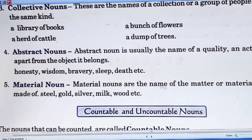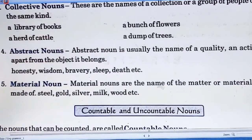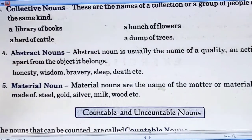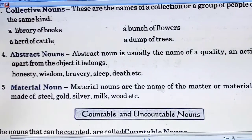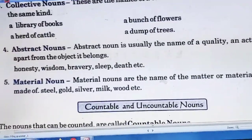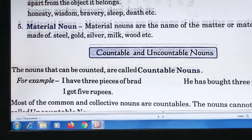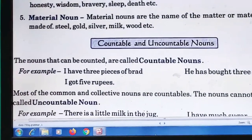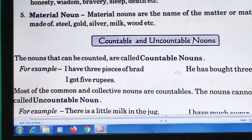Material nouns are the names of the matter or material from which things are made. For example: steel, gold, silver, milk, wood, etc. These are called material nouns. I have also uploaded a video on this topic on my YouTube channel — the link is provided below, please check it out.